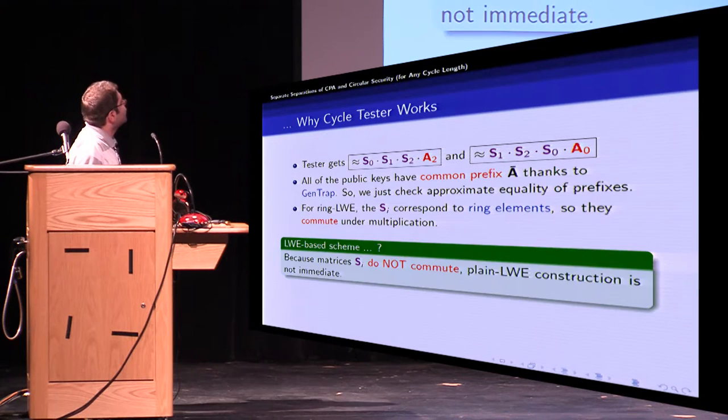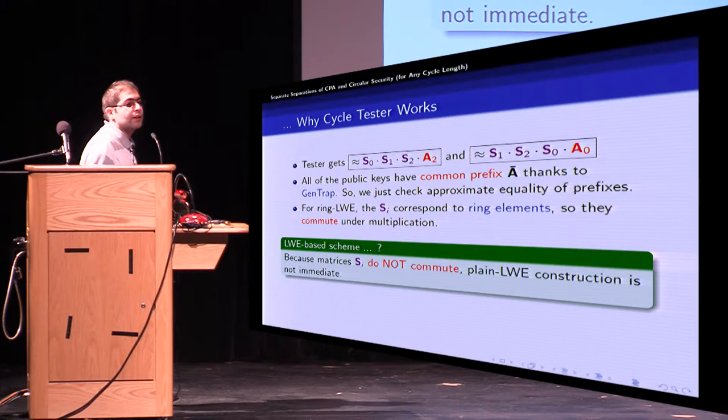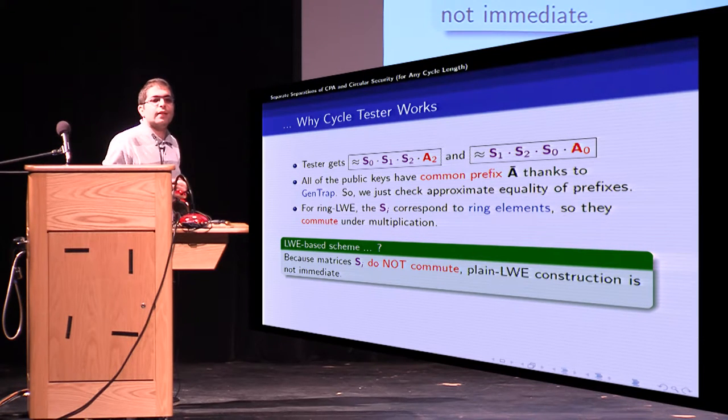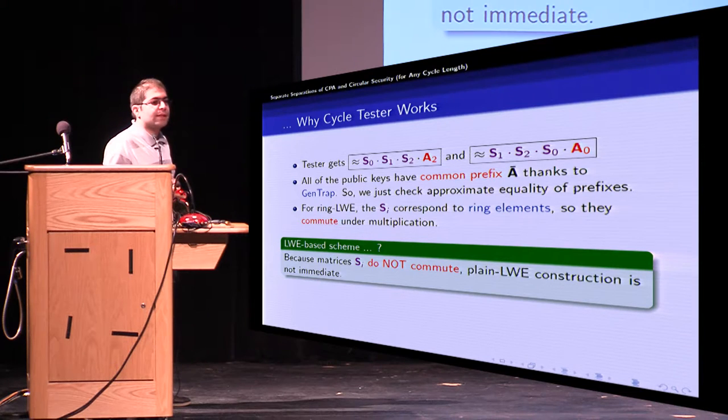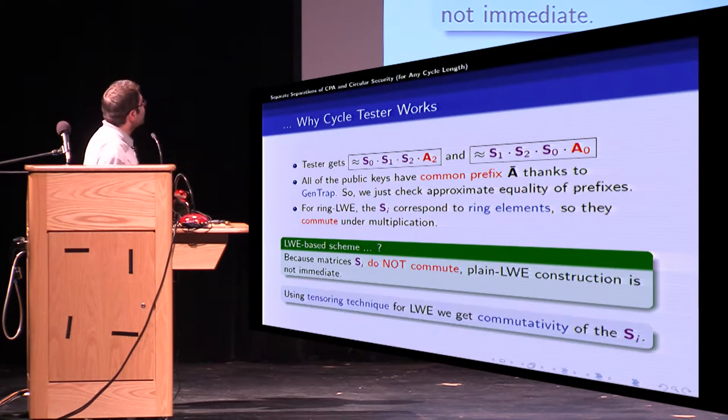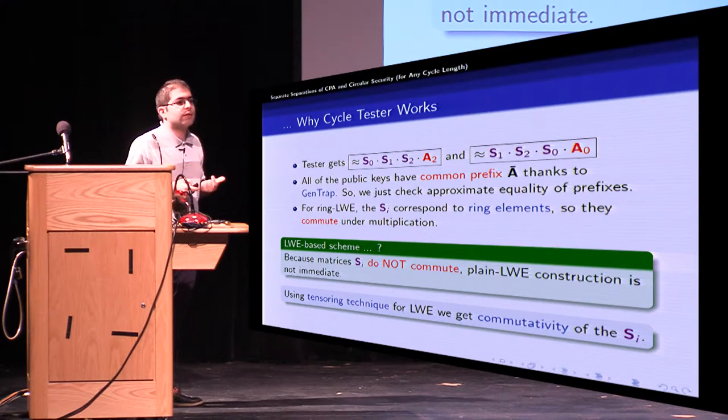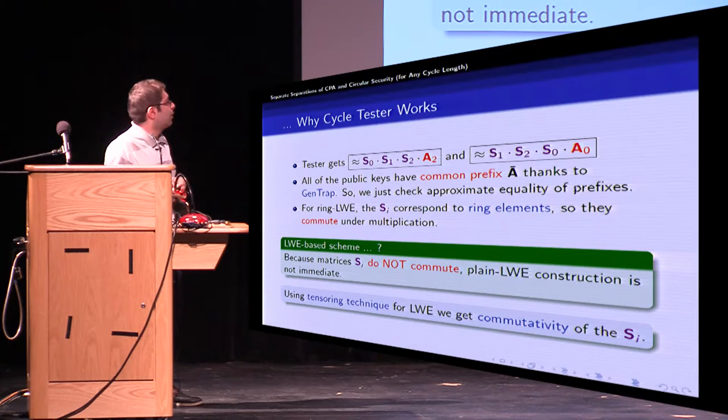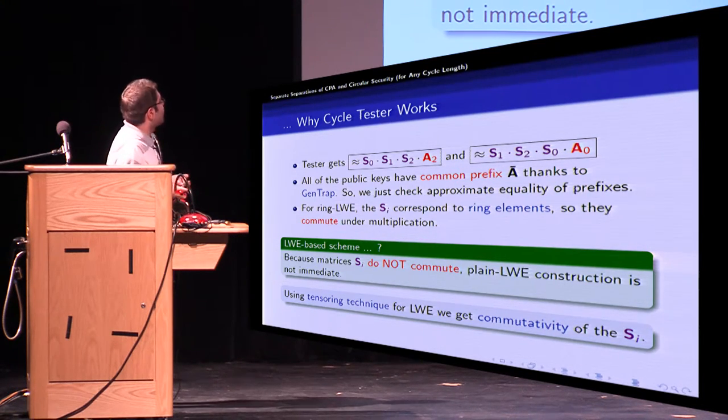However unlike other cryptographic constructions the ring based version does not immediately translate into plain LWE mainly because matrices S_i do not commute. Using tensoring technique for LWE we get commutativity of the S_i and then consequently we get plain LWE construction. I'm not going to get into that because of time but you can refer to the paper to see more details.